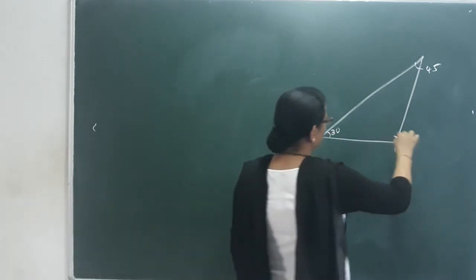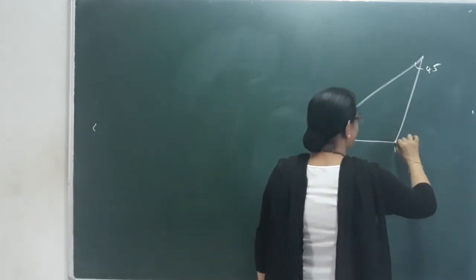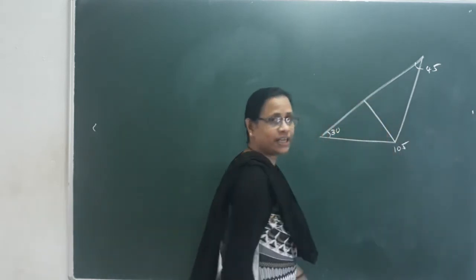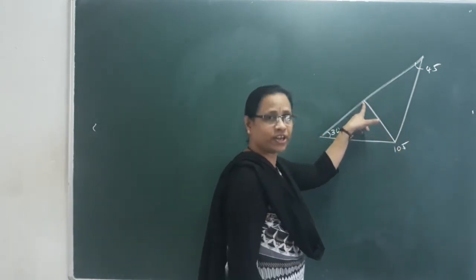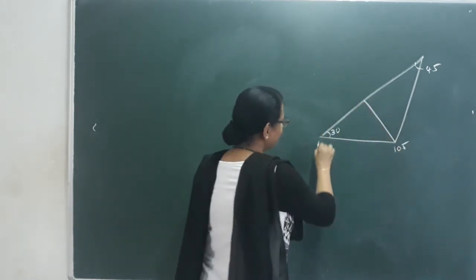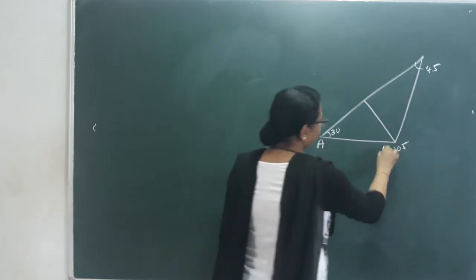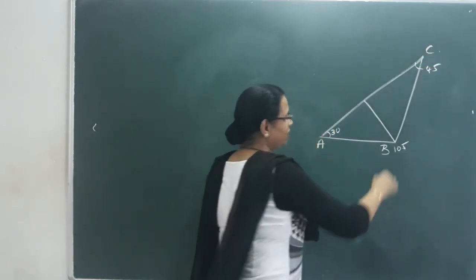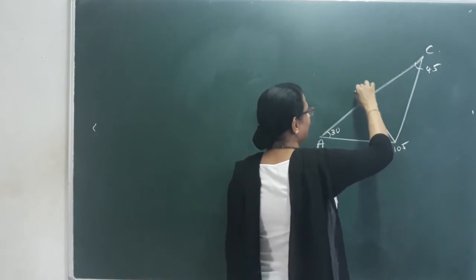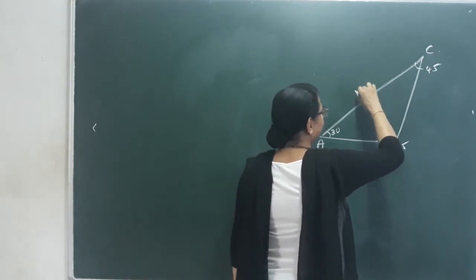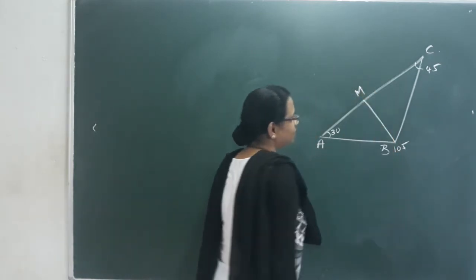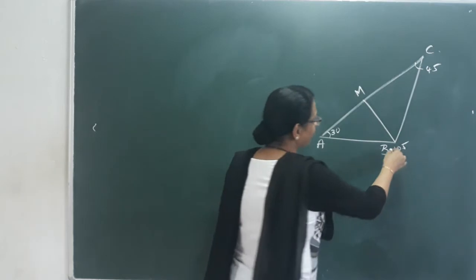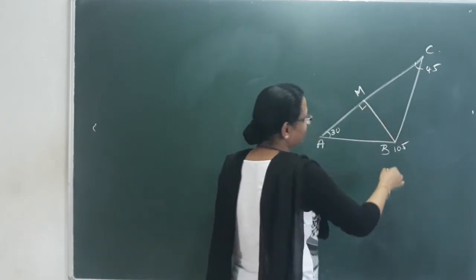So what do I do? I drop a perpendicular here, and another perpendicular here. This gives us triangle ABC. The perpendicular distance is AM, which is 90 degrees. The perpendicular BM is also 90 degrees.